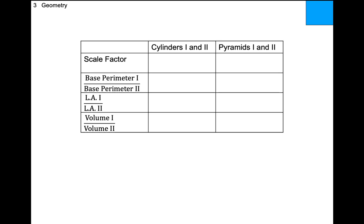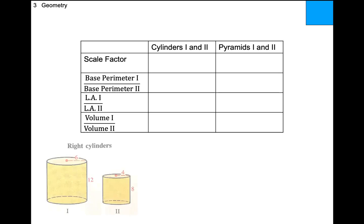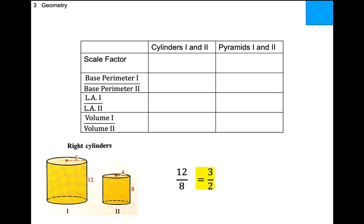Pick two corresponding measurements. 12 over 8 reduces to 3 over 2. Notice that six over four also gives 3 over 2 — it doesn't matter which corresponding sides you pick, you get the same ratio.